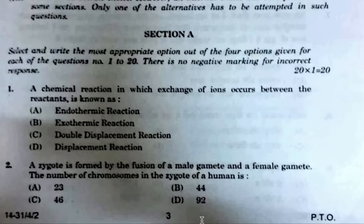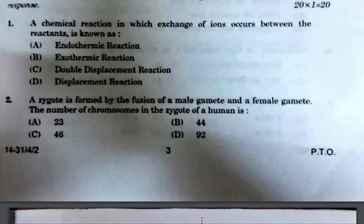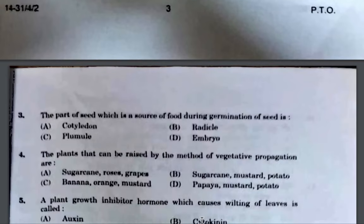Next, a zygote is formed by the fusion of a male gamete and a female gamete. The number of chromosomes in the zygote is 46. Next, the part of seed which is the source of food during germination is called cotyledon. Plants which grow with vegetative propagation include sugarcane, roses, and grapes.